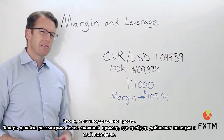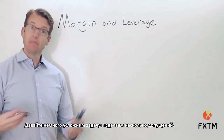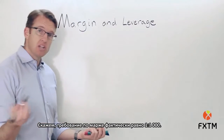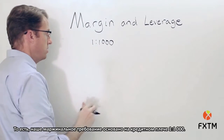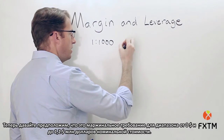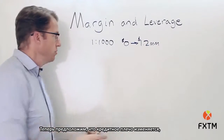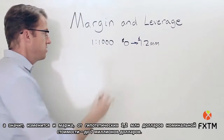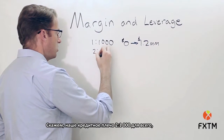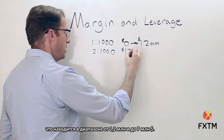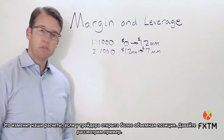Now that's a straightforward example. Let's make this more advanced as a trader is adding positions to their portfolio. We'll assume the margin requirement is based on a leverage ratio of 1 to 1,000 for anything from $0 up to $1.2 million in notional value. The leverage ratio then changes — and therefore the margin changes — for anything from $1.2 million up to $7 million, where it becomes 2 to 1,000.